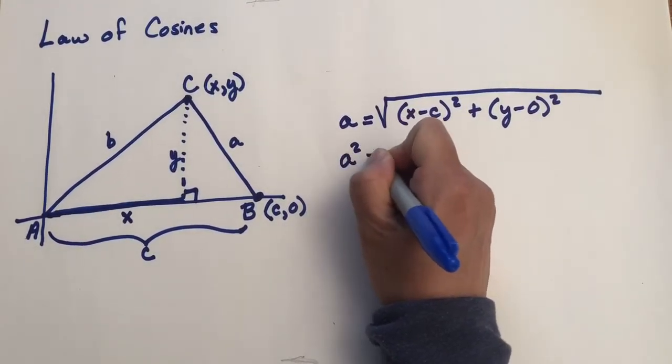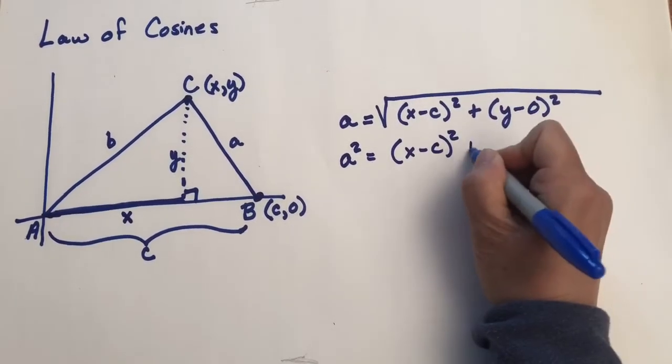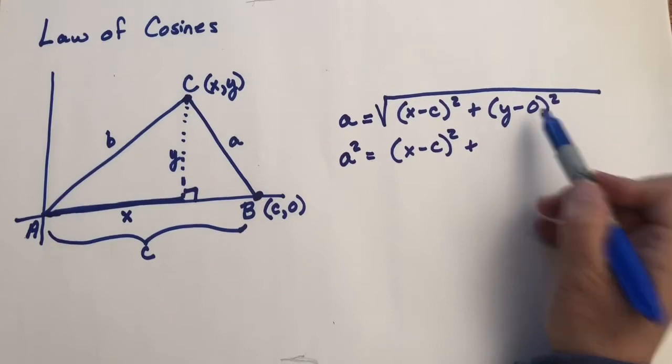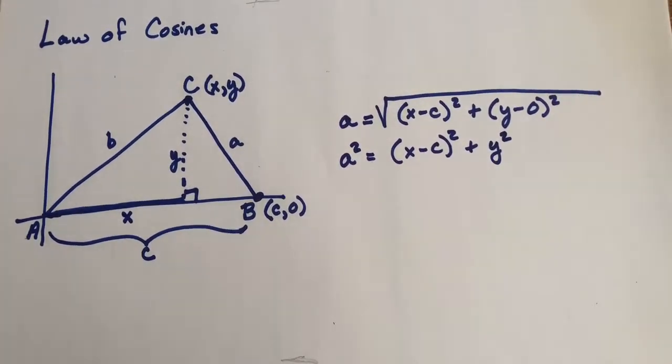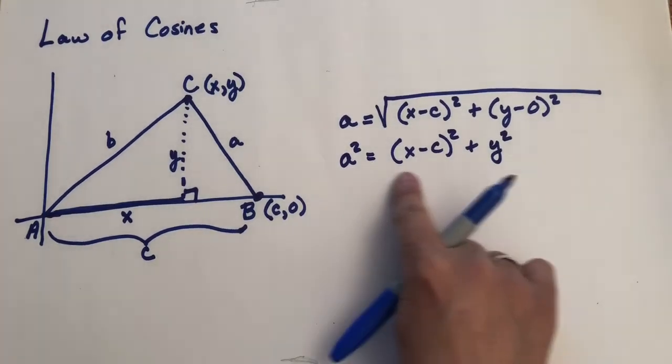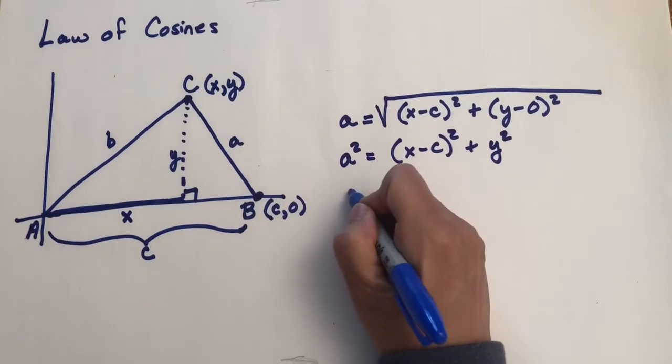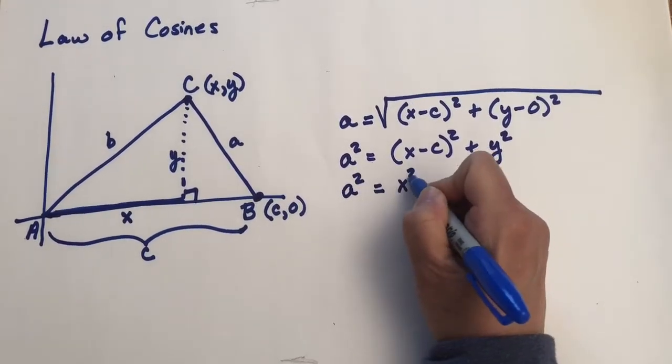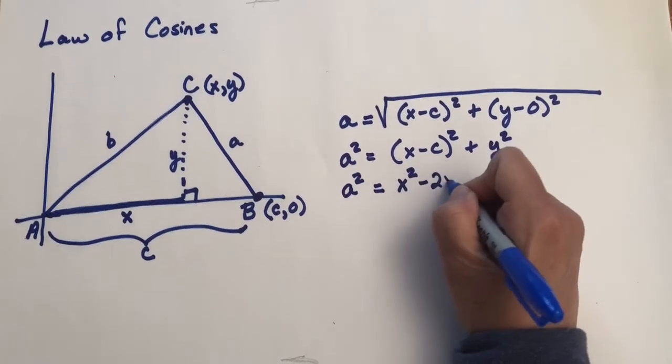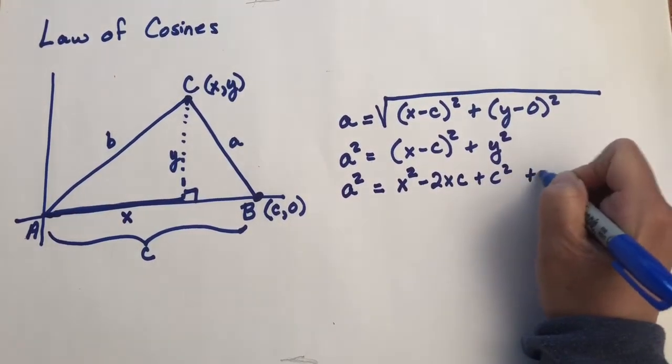Now I would like to get rid of this square root, so let's square both sides. So we have A squared equals X minus C squared, plus Y squared. And we can continue by multiplying this out. So this binomial, we're going to square the binomial. So we'd have A squared equals X squared minus 2XC plus C squared, and we still have the Y squared.